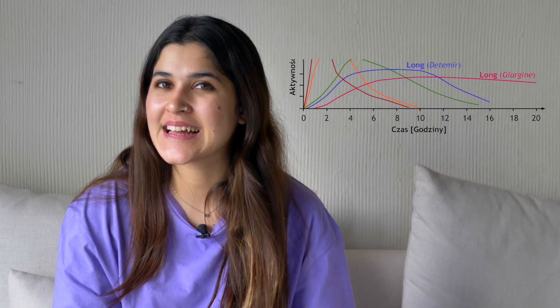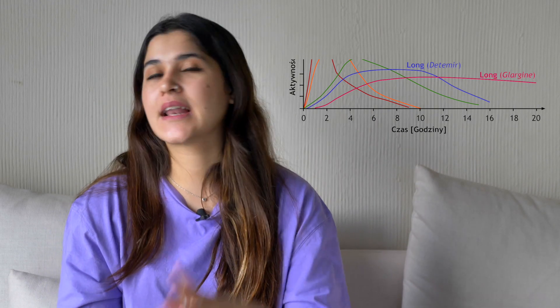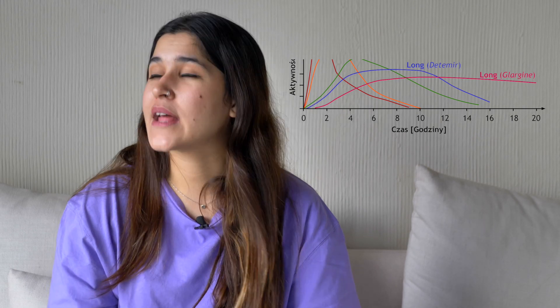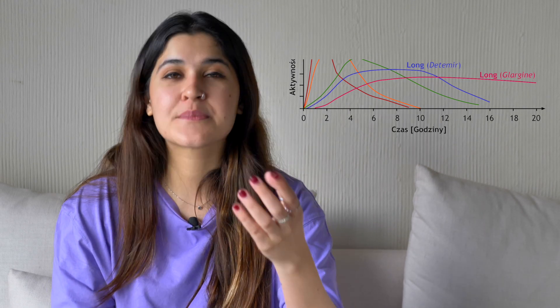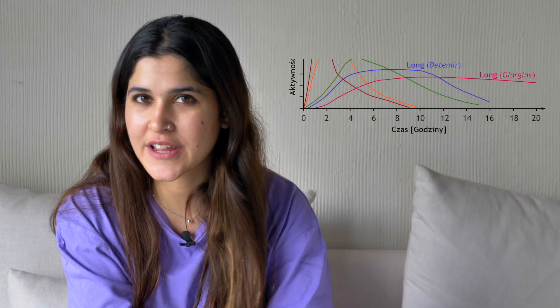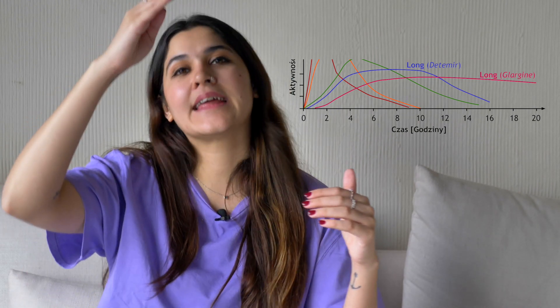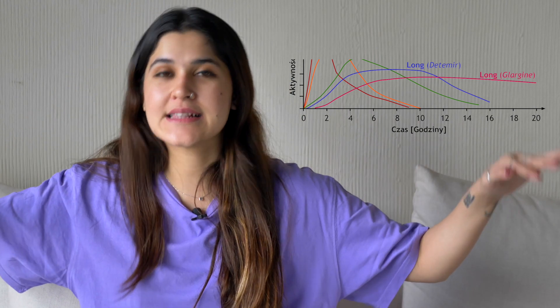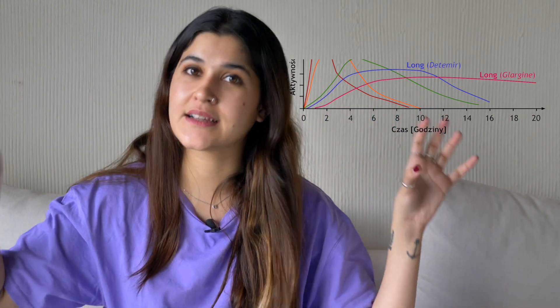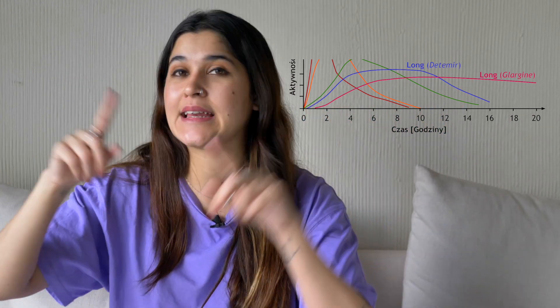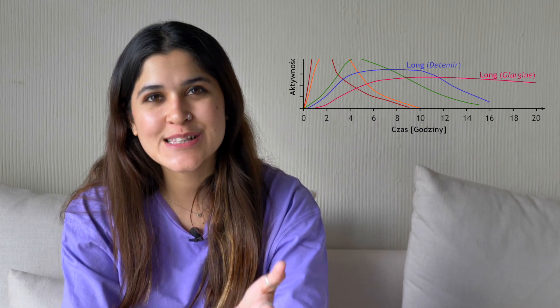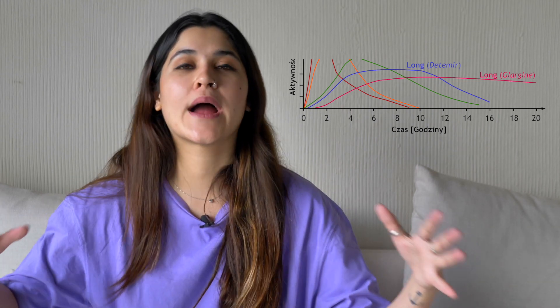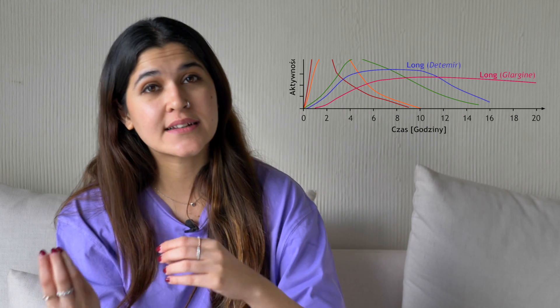Next we have long acting insulin, which we normally call our basal rate. That is insulin like glargine or detemir — brand names like Lantus. This insulin has a slight molecular modification where it has no peak at all. It provides a very stable, long acting absorption of insulin without any peaks, and this is what is used for your basal insulin. It covers you at times of rest, when you are not eating, and during exercise.